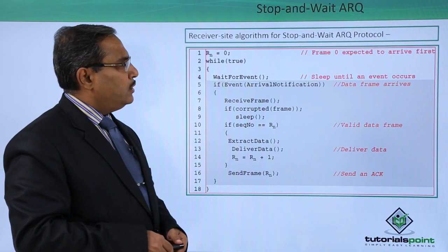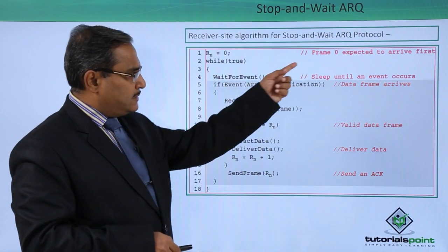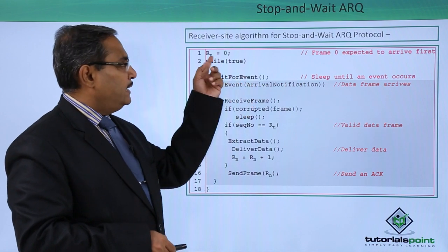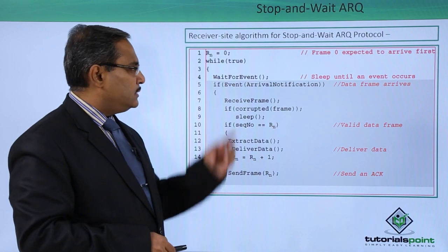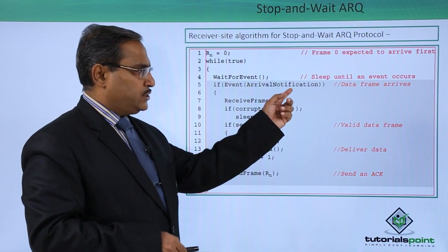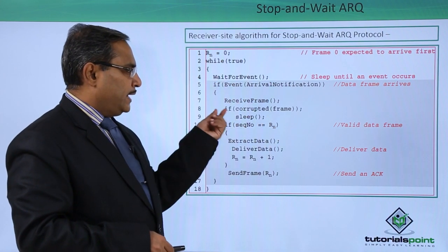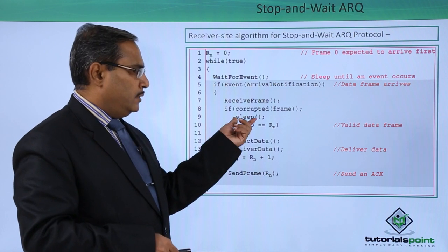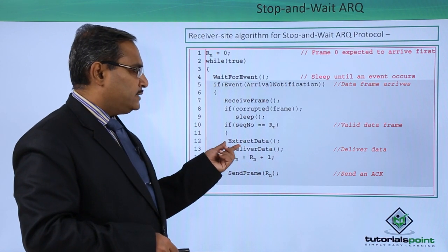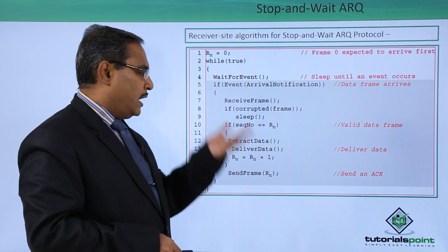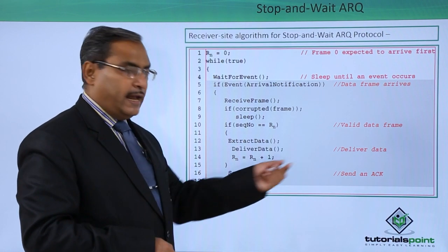The receiver-side algorithm for Stop and Wait ARQ: Rn = 0, while true — frame 0 is expected to arrive first. Wait for event — sleep until an event occurs. If the event is 'arrival notification,' meaning data from the sender has arrived: receive frame; if corrupted, sleep. If the sequence number equals Rn (valid data frame), extract data, deliver data to the upper layer, set Rn = Rn + 1, and send acknowledgement frame Rn.